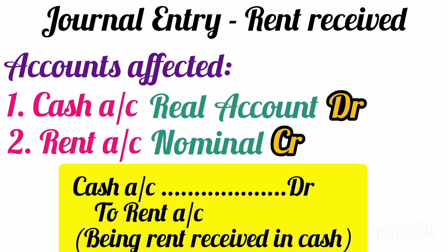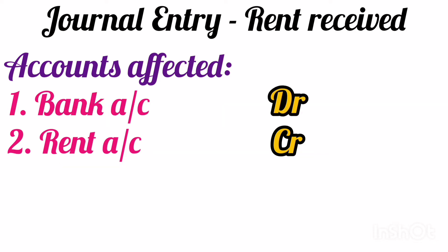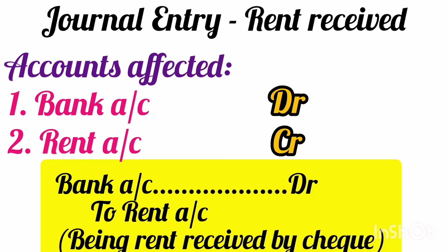If the rent is received by check, instead of cash account, the bank account will be debited. Because when you get the check, you receive the amount in your bank account. Whenever you receive any amount in your bank account, the bank account is debited, and whenever some money goes out, bank account is credited. Since the money will be received in the bank account, bank account will be debited. Hence, the journal entry will become bank account debit to rent account. The narration will be: being rent received by check.